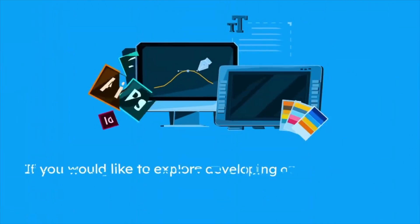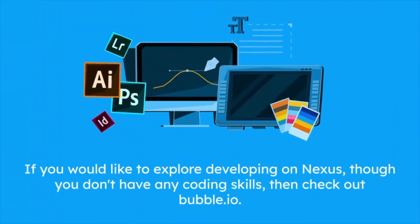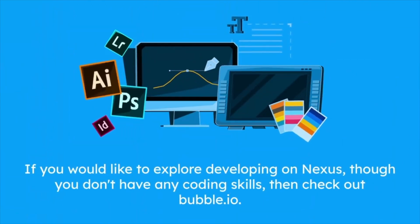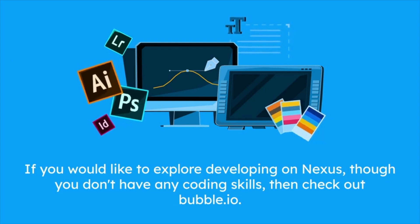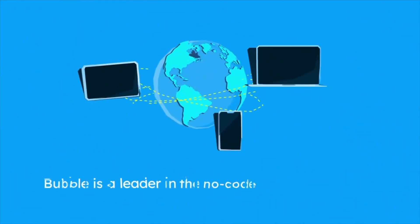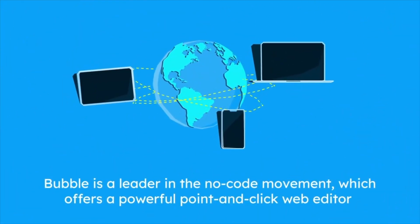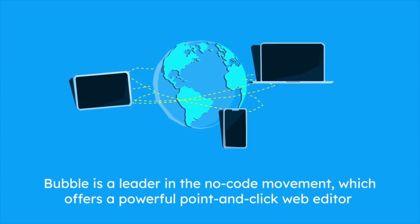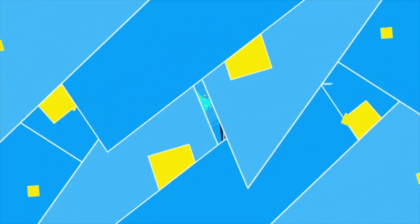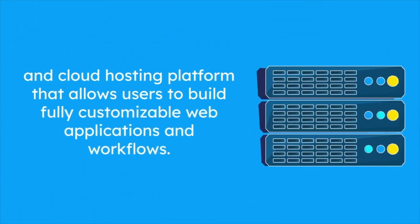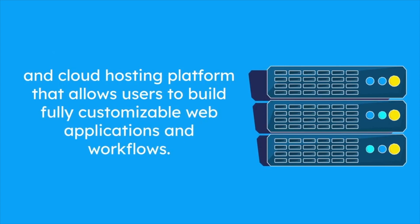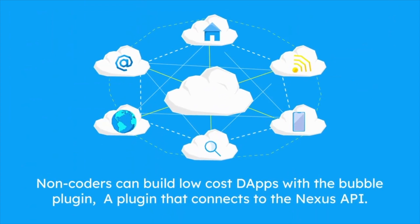If you would like to explore developing on Nexus, though you don't have any coding skills, then check out Bubble.io. Bubble is a leader in the no-code movement, which offers a powerful point-and-click web editor and cloud hosting platform that allows users to build fully customizable web applications and workflows. Non-coders can build low-cost dApps with the Bubble plugin that connects to the Nexus API.